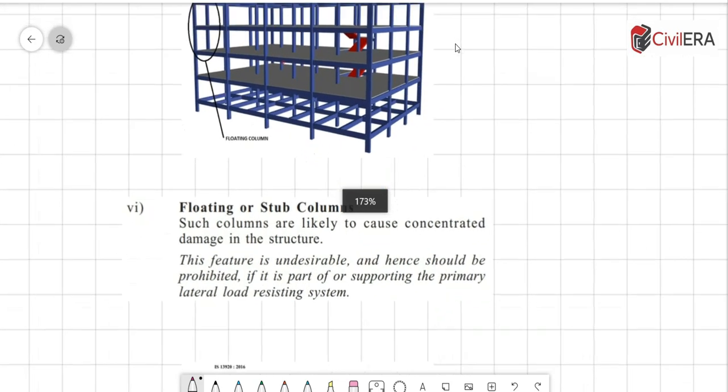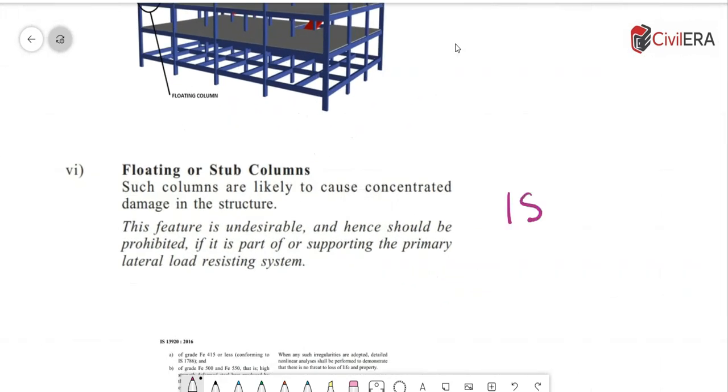I want to keep this video really short and explain the clause. This is from IS 1893:2016, and it clearly tells you - this is mentioned where the code talks about irregularity and where the code has given the table for irregularity. So you can go and check that part of the code and find this. It's the sixth point in the vertical irregularity part.